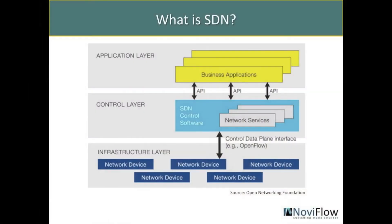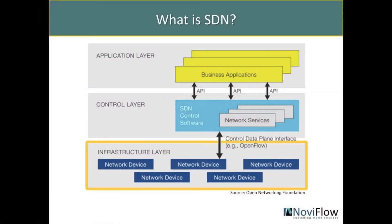Through SDN, the monolithic network devices are transformed into three horizontal layers. At the bottom is the infrastructure layer, commonly called the data plane, where the data packets are processed by network devices. The infrastructure layer consists of network devices such as physical or virtual switches, routers, and network appliances such as NATs, firewalls, and load balancers.